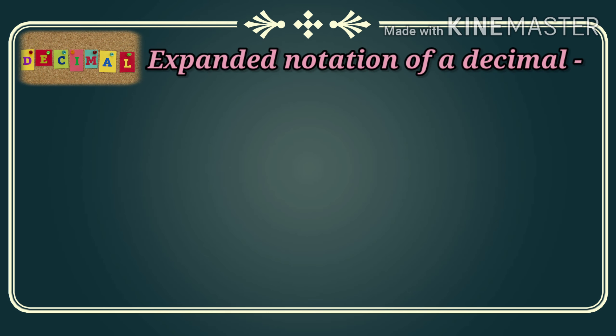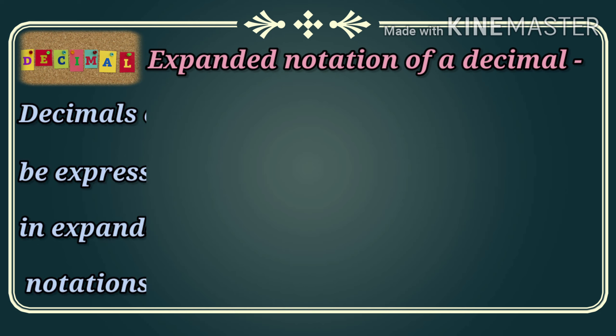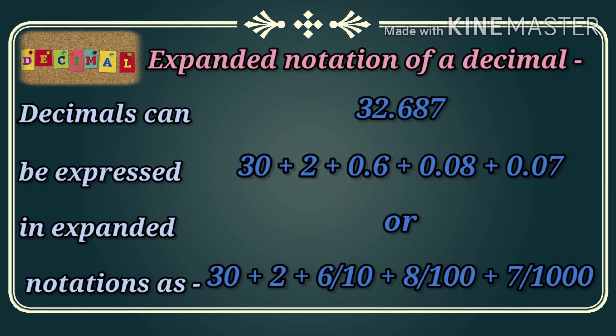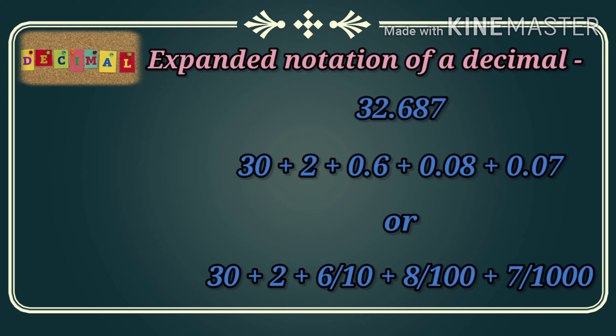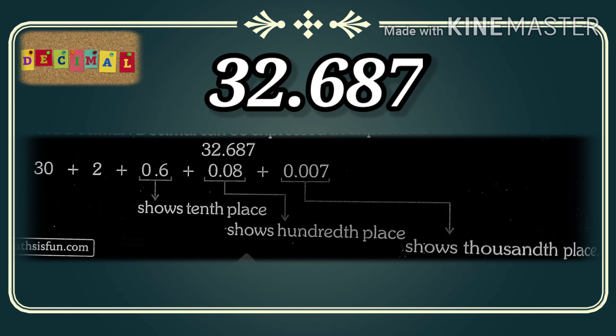Now let's talk about the expanded notation of a decimal. Decimals can be expressed in expanded notations. For example, if the given value is 32.687, we can expand it as: 30 + 2 + 0.6 + 0.08 + 0.007, or equivalently 30 + 2 + 6/10 + 8/100 + 7/1000.